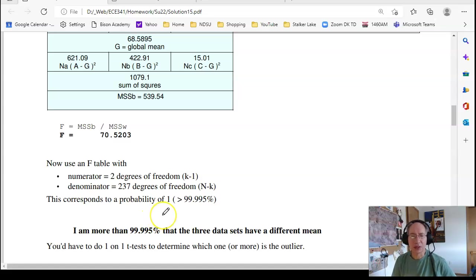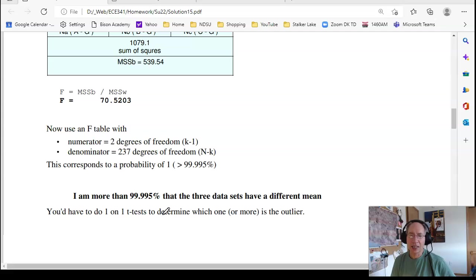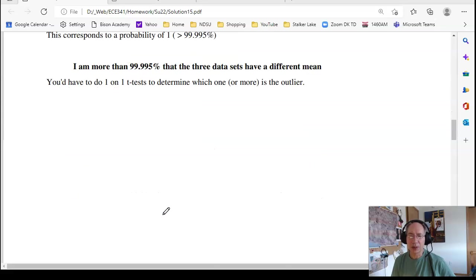With fewer data points, I wouldn't be certain. So with 80 years of data, I can tell there is a difference between June, July, and August.